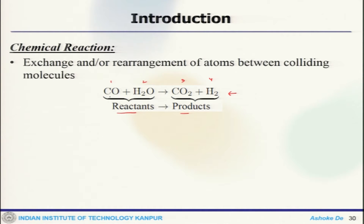Here CO and H₂ are the reactants — they react with each other and finally you get the products in terms of CO₂ and H₂O. So there are different species. When this kind of chemical reaction takes place, it is a rearrangement of atoms between colliding molecules.